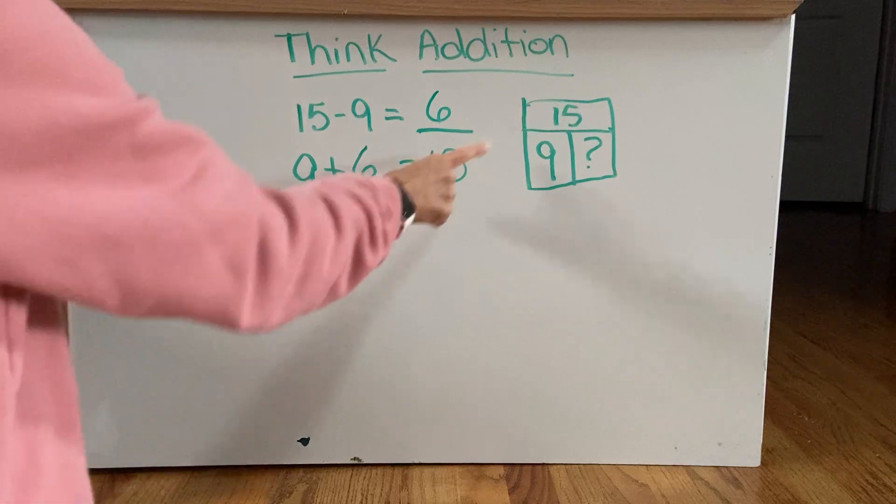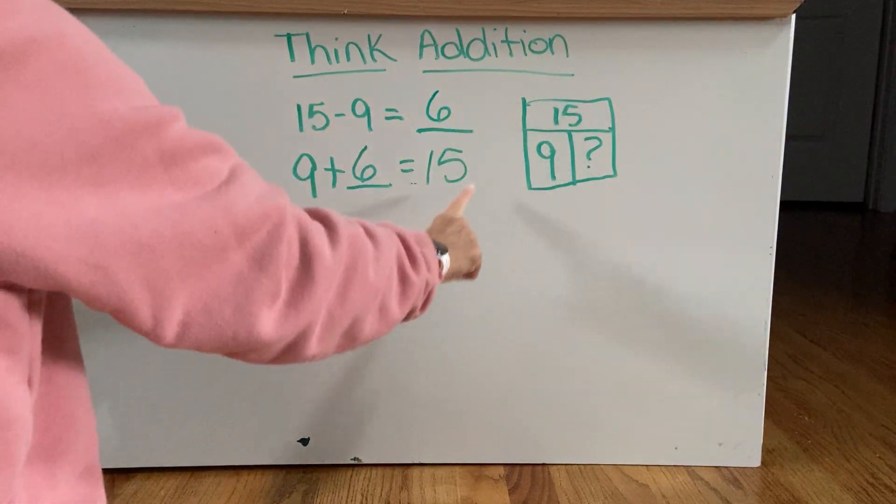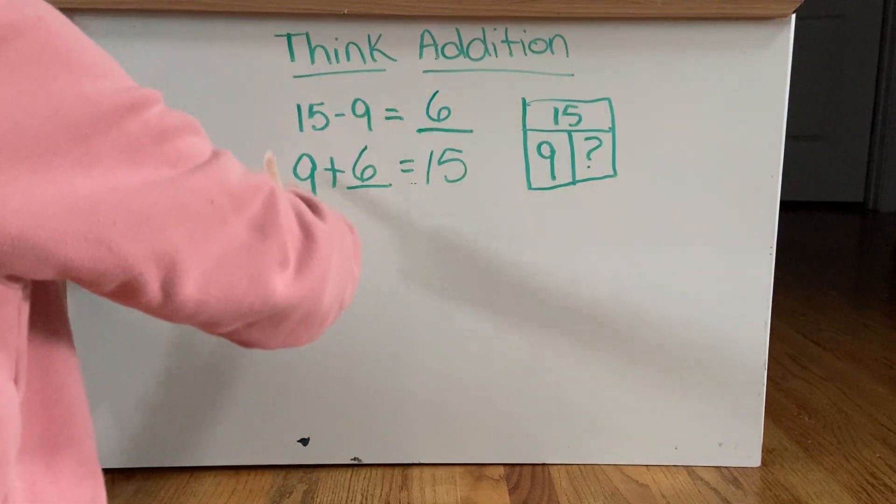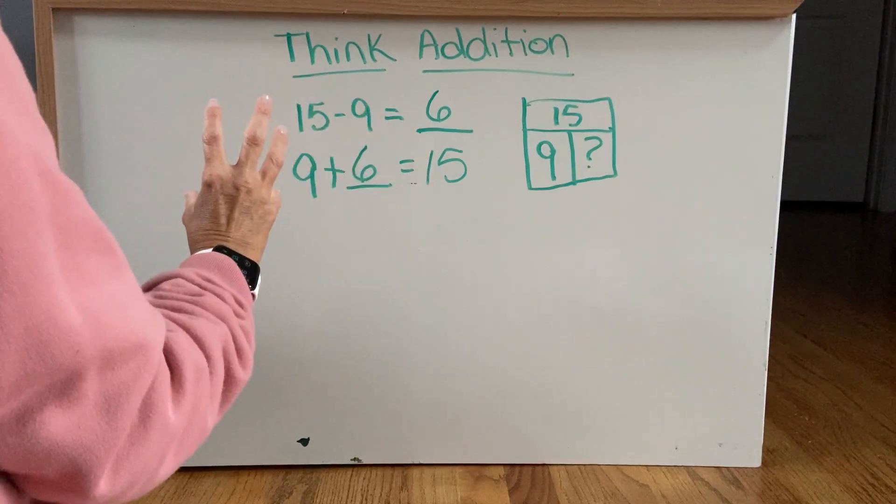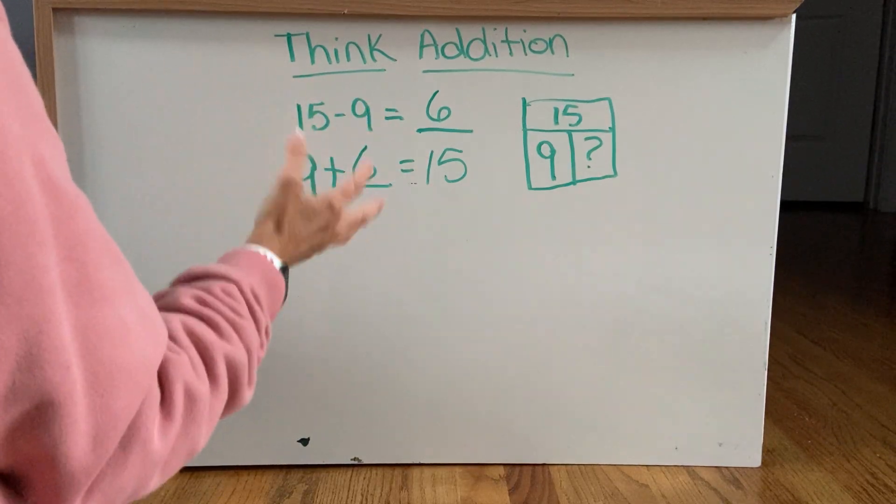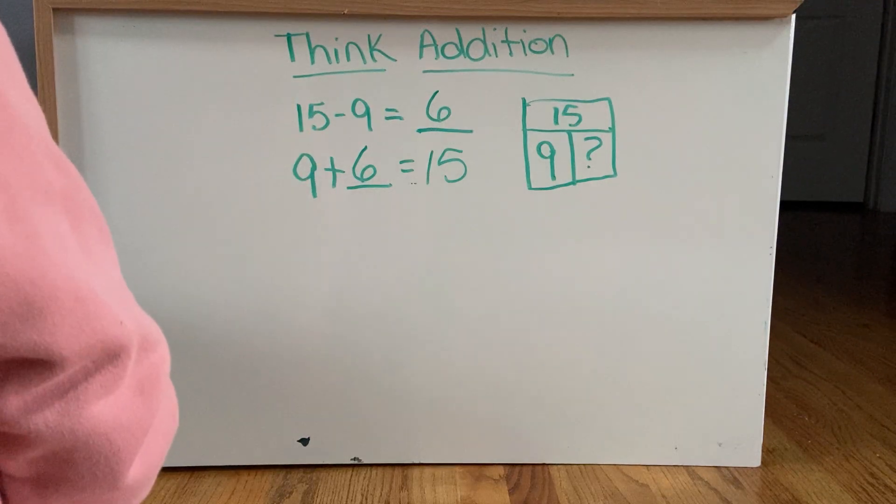Okay. So Think Addition is just basically remembering that all of these numbers, addition and subtraction, they're a fact family. So you're just trying to find the missing number in the family so you can add or subtract to figure out what the answer is.